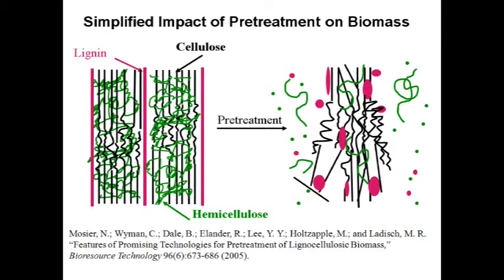One of the research topics we work on at LORI is understanding how to efficiently deconstruct plant cell walls to release the sugars from cellulose and hemicellulose. We can then convert these sugars, after their release, to biofuels and other renewable bioproducts.